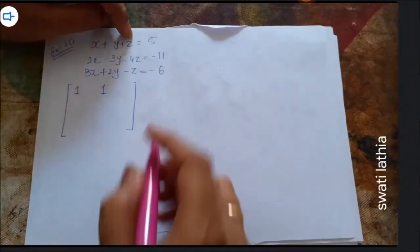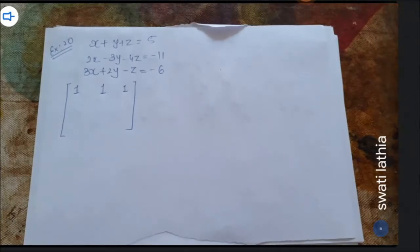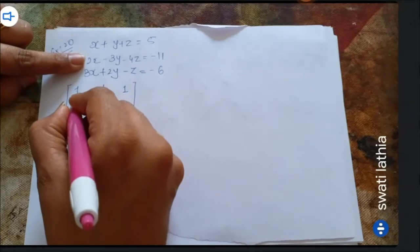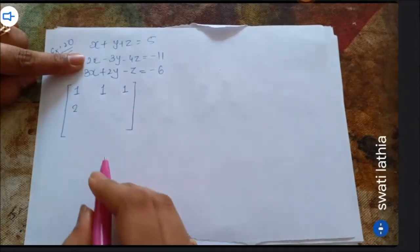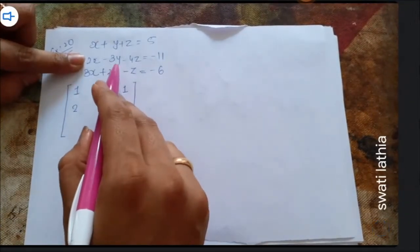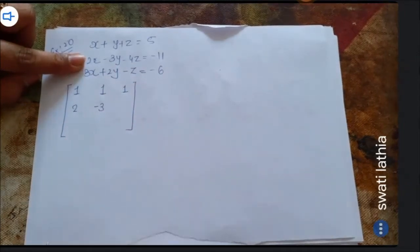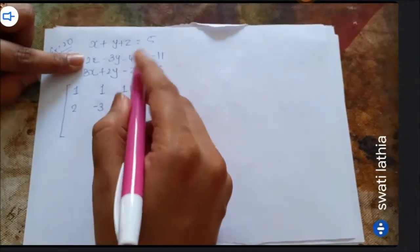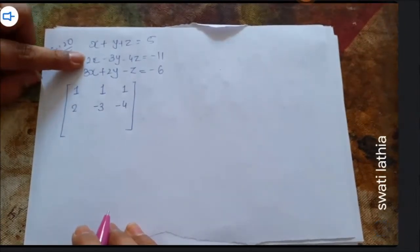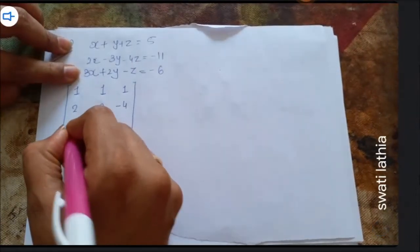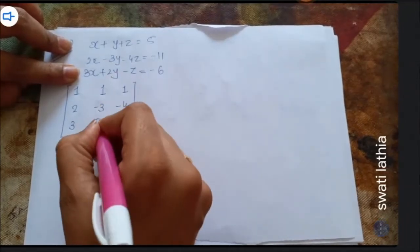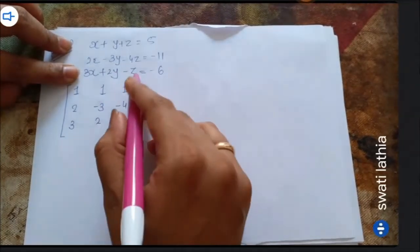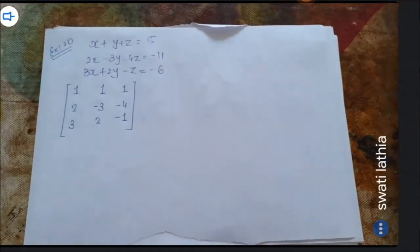z has coefficient 1. The first equation: 1·x + 1·y + 1·z. Second equation: coefficient of x is 1, plus 2y, minus 3z, minus 4 — these are the coefficients for the second row.